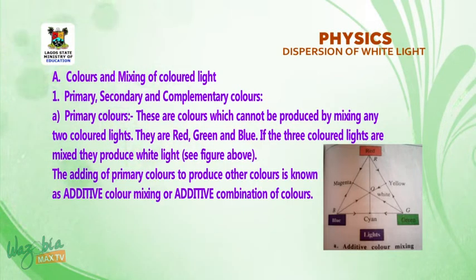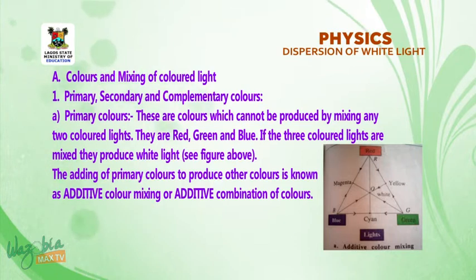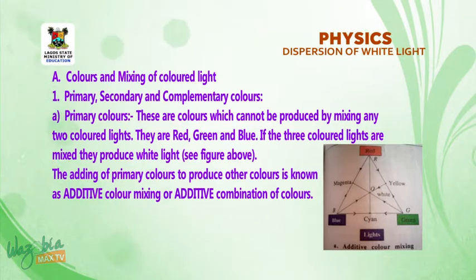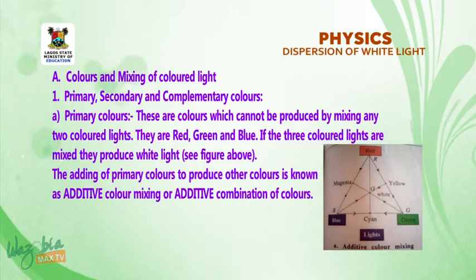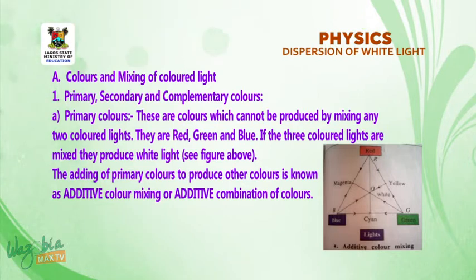Primary colors: these are colors which cannot be produced by mixing any two colored lights. They are red, green, and blue. If the three colored lights are mixed, they produce white light. The adding of primary colors to produce other colors is known as additive color mixing, or additive combination of colors.